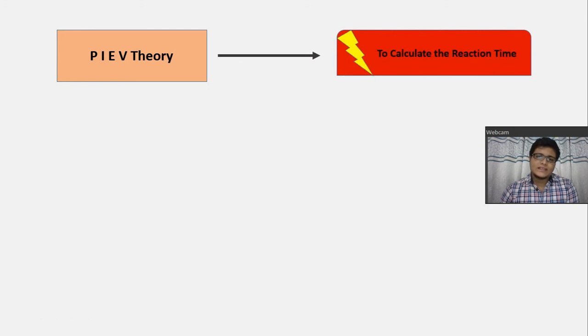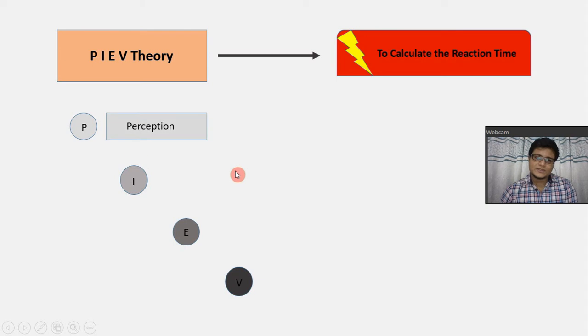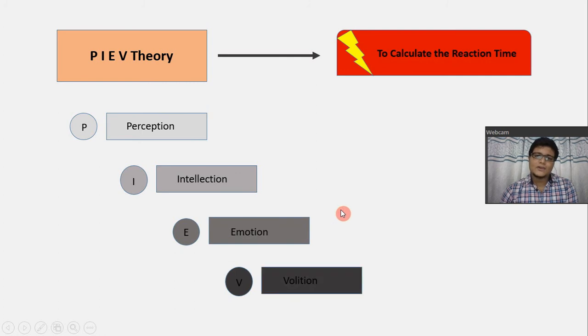So, the initials of PIEV theory stands for some words. Okay. So, let us know what are those. So, P stands for perception. I stands for intellection. E stands for emotion. And V for volition.